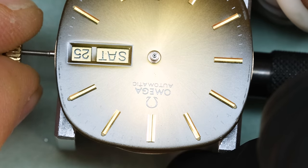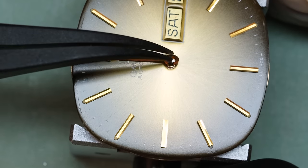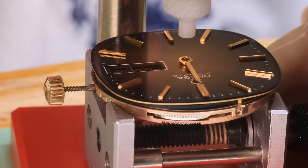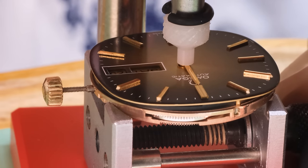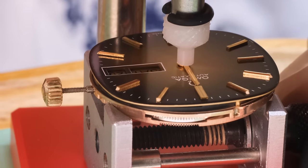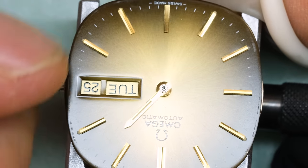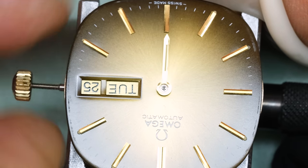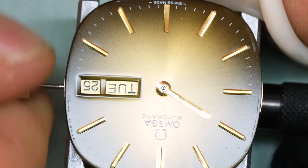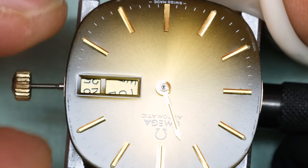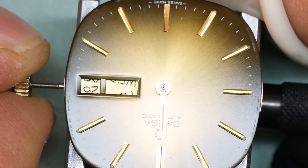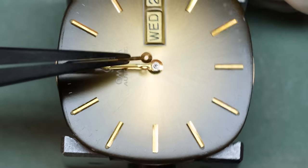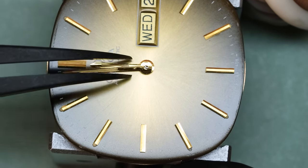All right, we then pull the crown out into time-setting mode and rotate until the date flips over. And that should happen at midnight. So that means we can set the hour hand at 12 at that point. We always want to make sure that the hands do not touch the dial or each other. Thus that they are parallel to the dial. And then we'll check the alignment a couple of times.